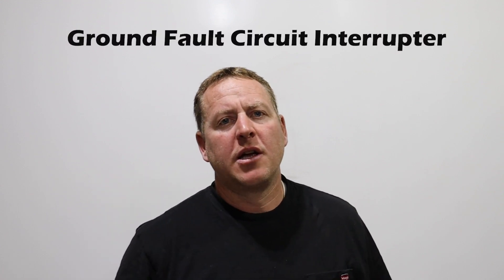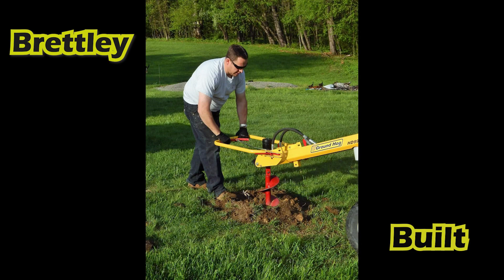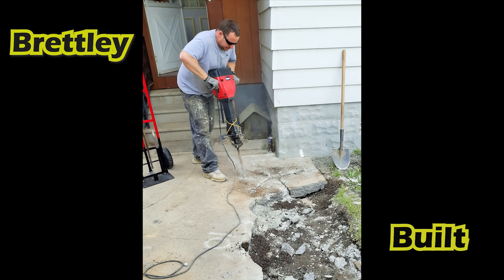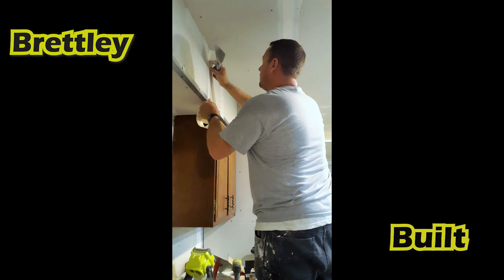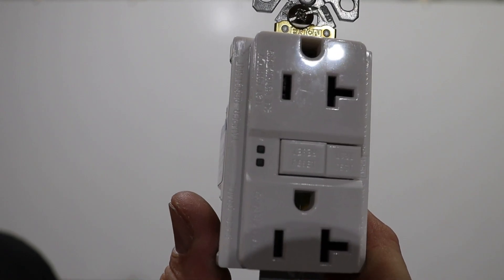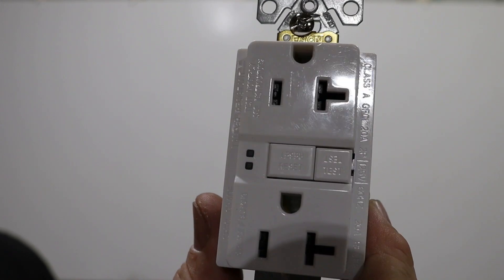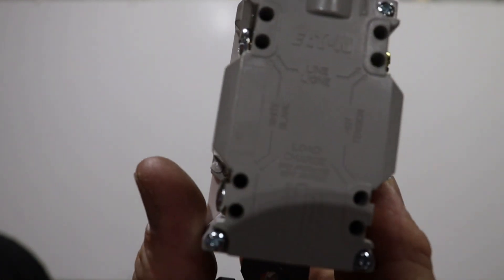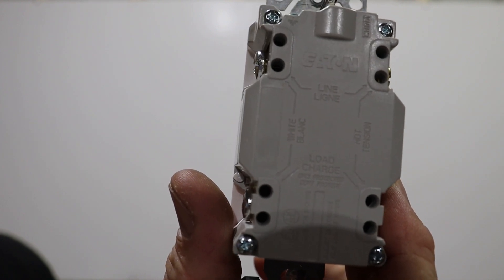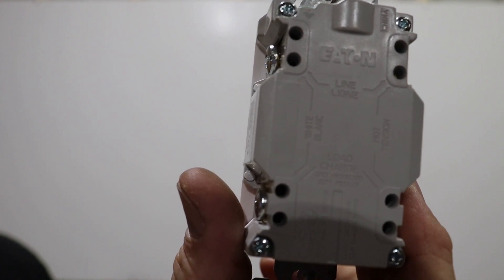In this video, I want to talk about ground fault circuit interrupter outlets or GFCIs, or you might have heard them called GFIs. This is what these outlets look like. Even though they look pretty similar besides the buttons, they're also very specific. There is a load side and a line side, and we'll discuss what that means later.